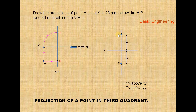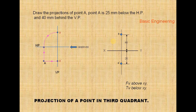This A represents the top view of point A; this A-dash represents the front view of point A. In third angle projection, you get the front view below the XY line and the top view above the XY line. If you compare to first angle projection — in first angle you get the front view above the XY line and top view below. In third angle projection, front view is below the XY line and top view is above. Like this you can draw the front view and top view of point A in third angle projection.